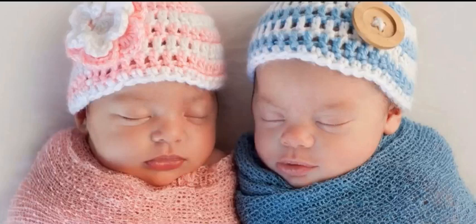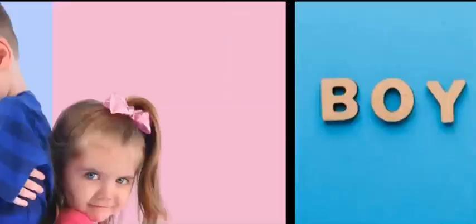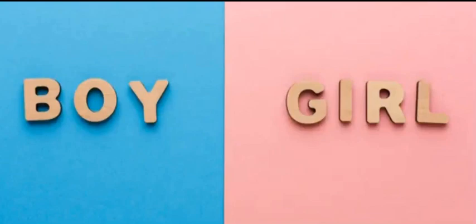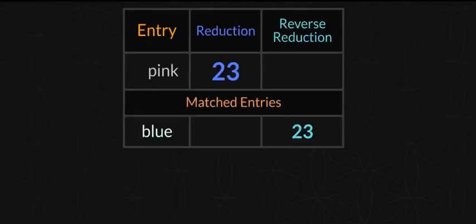It starts at birth — girl gets pink, boy gets blue. You see that? Look as the helicopter goes above. Pink syncs up with blue in gematria — from birth they divide us. Is this video going to get a lot of views? Probably not, but I hope it reaches the people it needs to. Pink syncs up with blue in gematria.